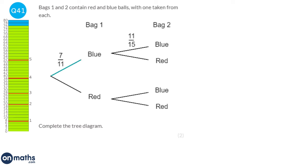Looking at the tree diagram for two bags: the probability of picking blue from bag 1 is 7/11, so red is 4/11. For the next section, blue is 11/15 so red is 4/15. Since bag 2 is independent of bag 1, the probabilities for bag 2 are the same as those at the top of the tree.